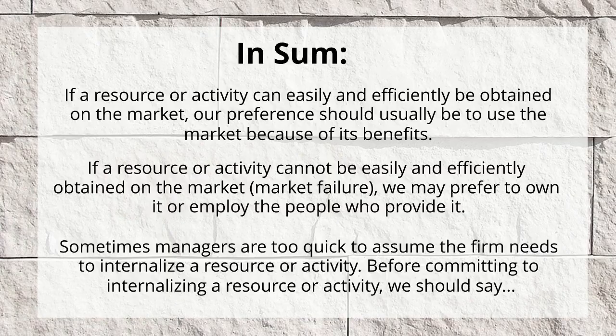In sum, if a resource or activity can easily and efficiently be obtained on the market, our preference should usually be to use the market because of its benefits. If a resource or activity cannot be easily and efficiently obtained on the market — there's a market failure — we may prefer to own it or employ the people who provide it. Sometimes managers are too quick to assume the firm needs to internalize a resource or activity.